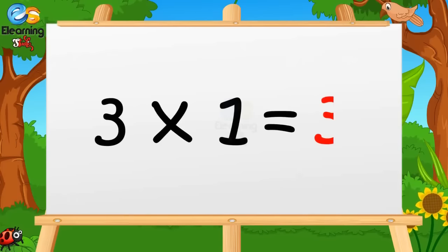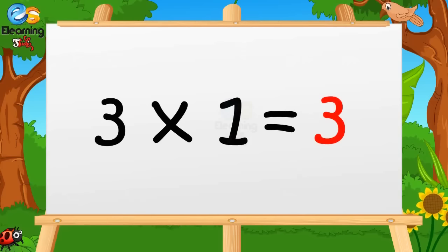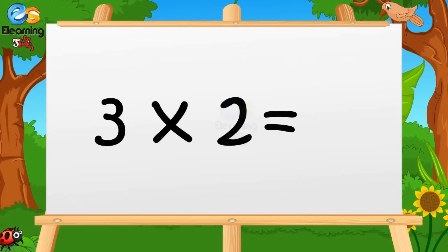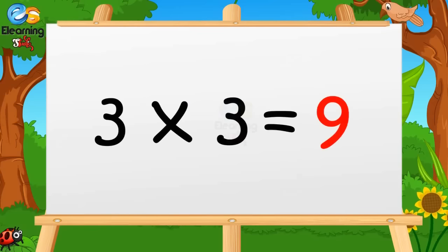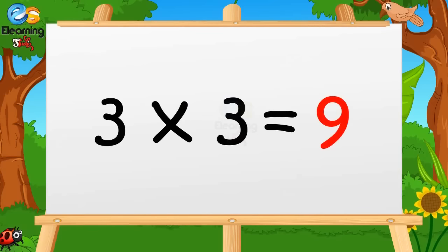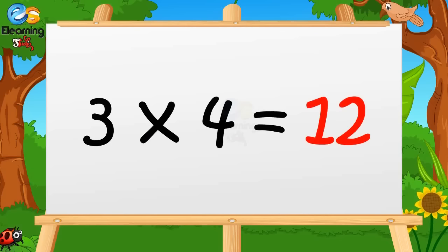Three ones are three. Three twos are six. Three threes are nine. Three fours are twelve.